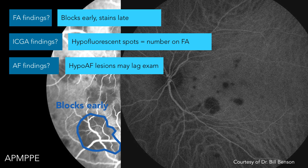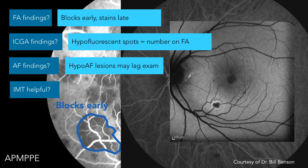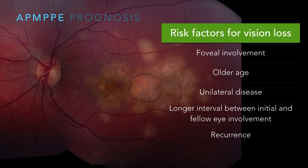Autofluorescence findings: they kind of lag the exam. I thought it was helpful monitoring this particular individual because it would help me see if there's some new activity, but if they truly do lag, then I guess I was behind. IMT helpful? No. I'm not going to talk about relentless placoid chorioretinitis, but that's sort of the chronic version of AMPPE. Risk factors for vision loss: foveal involvement, older age, unilateral disease, longer interval between initial and fellow eye involvement, and recurrence in the same eye. 20% of folks are left with residual visual dysfunction. Look at all that stuff — you can't see well with RPE torched like that.